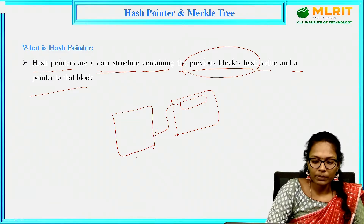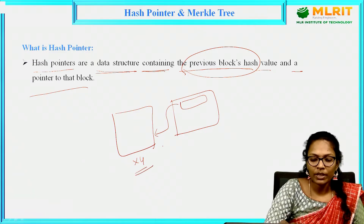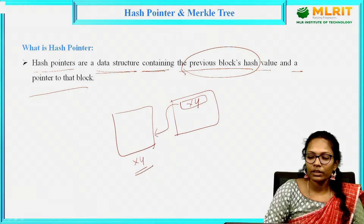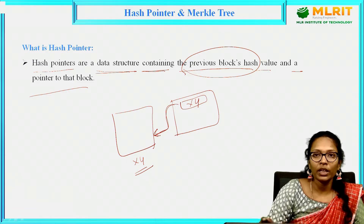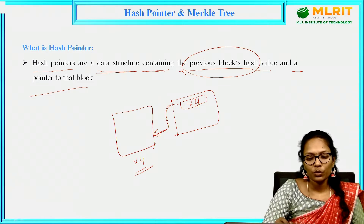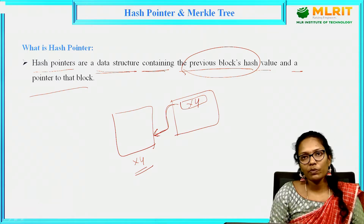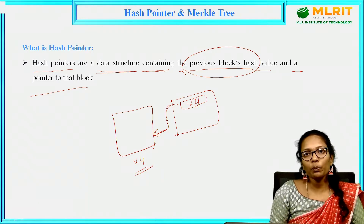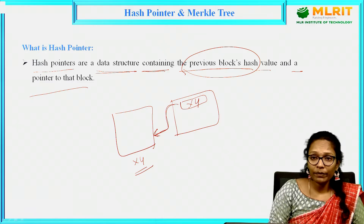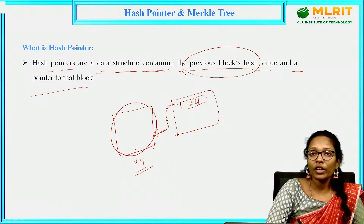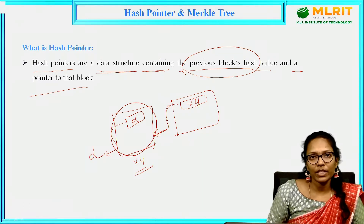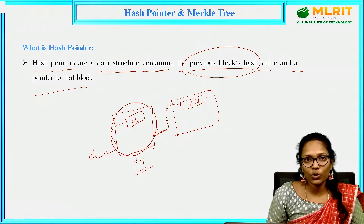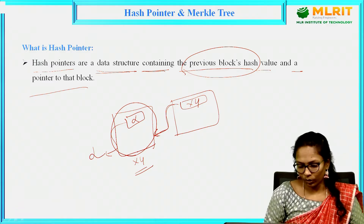For example, if the previous block's hash is some value X, Y, then that value will be stored here along with a pointer to that block. This is a data structure which stores the hash value of the previous block and also points to the previous block. If it is a Genesis Block or first block, it does not have any hash pointer, because it cannot point to any previous block.